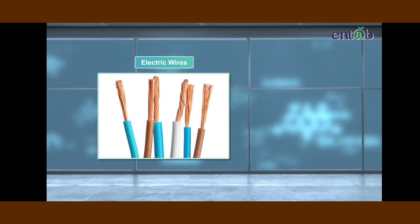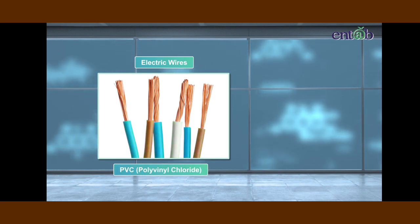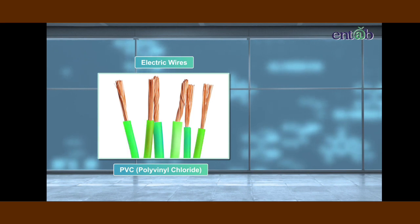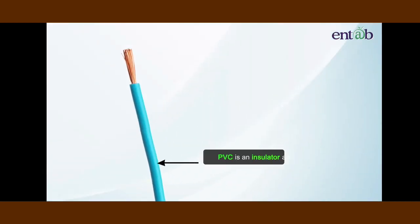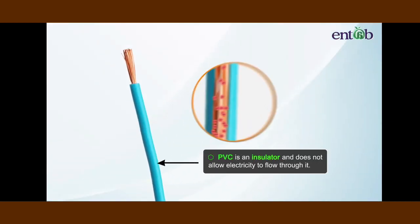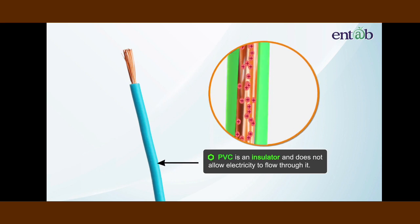The electric wires we have used are covered with a coating of PVC, that is polyvinyl chloride, which is a rubber-like material. Why is it so? It is because PVC is an insulator. It does not allow the electric current to pass through it.